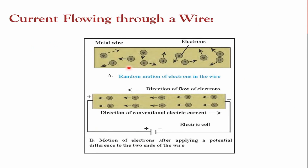Looking at the diagram of a wire, you can see free electrons in random motion — they are not channelized or oriented. In the second part of the diagram, a cell is introduced to provide potential difference. Due to this potential difference, the electrons in the wire flow from higher potential to lower potential. Inside the wire, electrons move from negative to positive terminal because electrons, being negatively charged, are attracted toward the positive terminal.